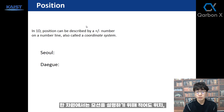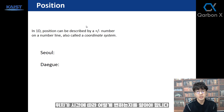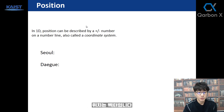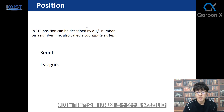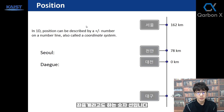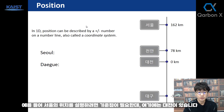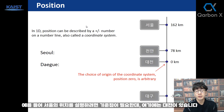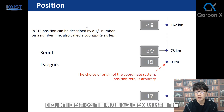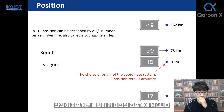In one dimension, you need to know at least how position changes as a function of time to describe motion. Position is a vector — we'll explain what a vector is. Position is described by a plus or minus number in one dimension. The number line is also called the coordinate system. For example, to describe the position of Seoul, we need a reference point.